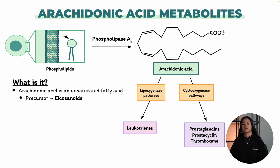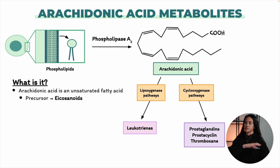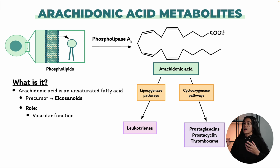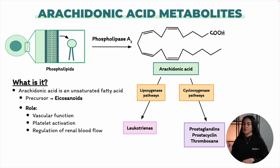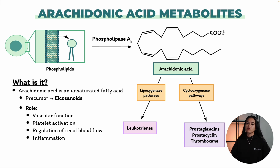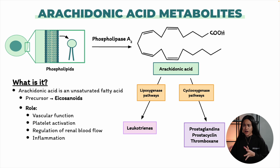Eicosanoids are involved in many different processes. For example, they help control blood flow, affect how platelets clump together, regulate stomach acid, and manage kidney function. But their most well-known role is in inflammation, where they play a big part in how the body responds to injury or infection.